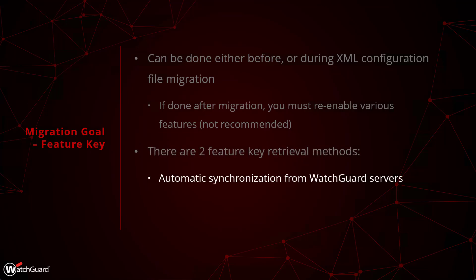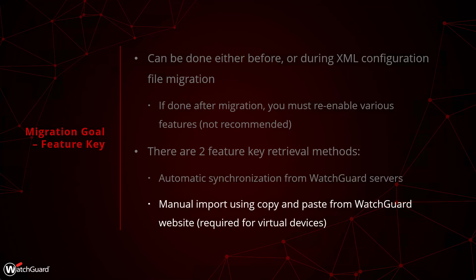There are two ways to get your feature key. The first and easiest method is to have the Firebox automatically synchronize to WatchGuard's servers. Within the automatic synchronization process, you can manually invoke a feature key synchronization through either Firebox System Manager or the Web UI. Alternatively, if this is a new device with a default config — straight out of the box or after a factory default — connect the device to a DHCP connection on interface zero. When it first boots up in that default state, it will call home to the servers and automatically retrieve its feature key.